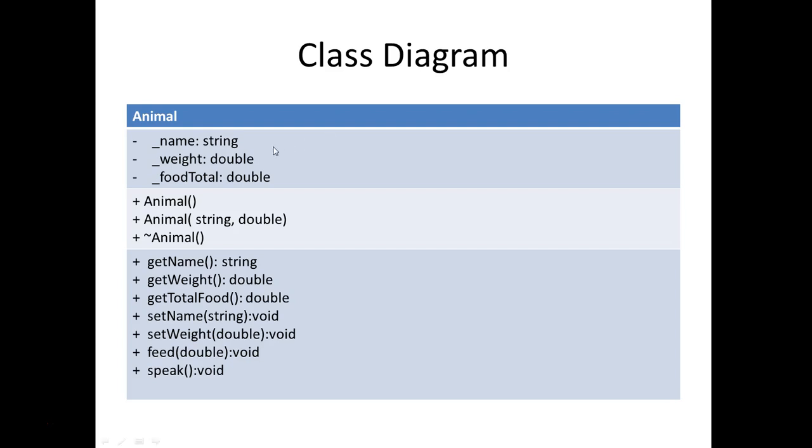Please notice we have three instance fields. The minus sign indicates that they are private, and we're using underscore name, underscore weight, and underscore food total. In the class diagram, the colon separates the identifier from the data type. So the first one is a data type string. The others are doubles.